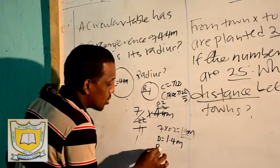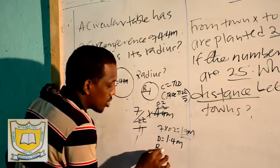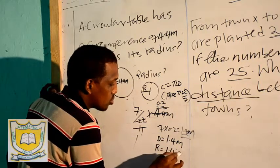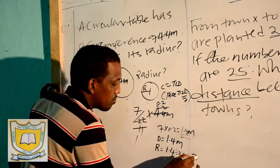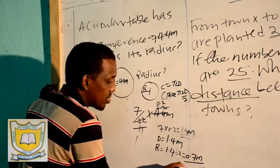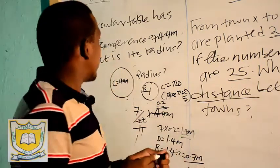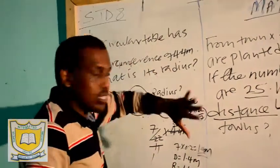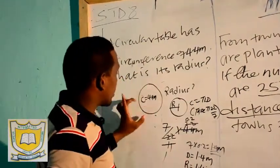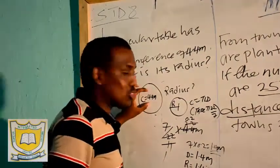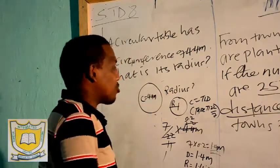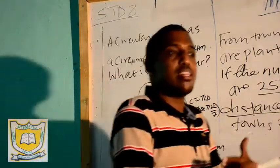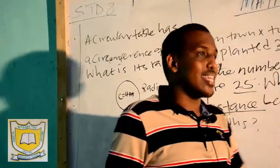So the diameter is 1.4 meters. Then the radius will be the diameter divided by 2. So 1.4 divided by 2 gives 0.7 meters. We were given the circumference, which means the perimeter — the whole of it is 4.4 meters. To get the radius, you first get the diameter, then divide by 2.